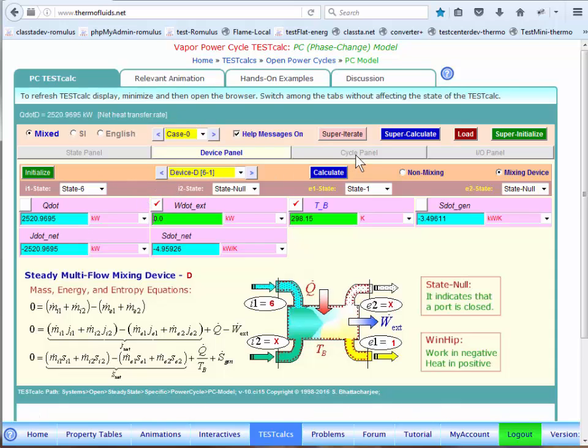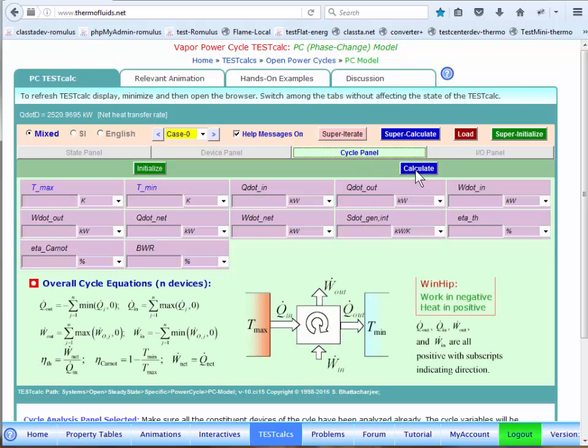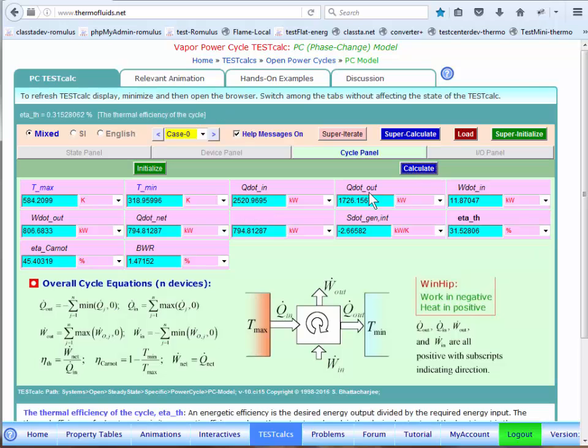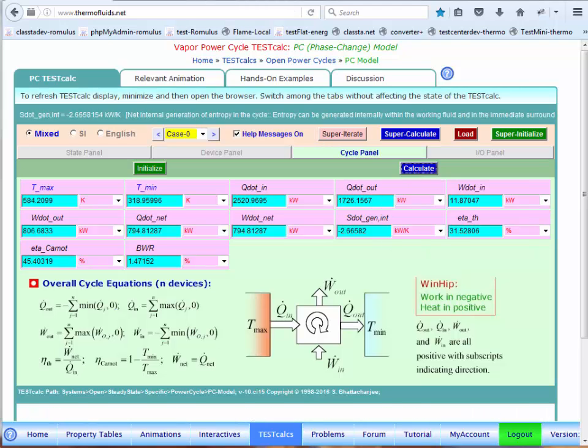We just go to the cycle panel and do a calculate. We immediately see that we have already calculated the efficiency, the thermal efficiency is shown here. Also, many other quantities are shown here, for instance, the net work, you can see, is 794 kilowatt.